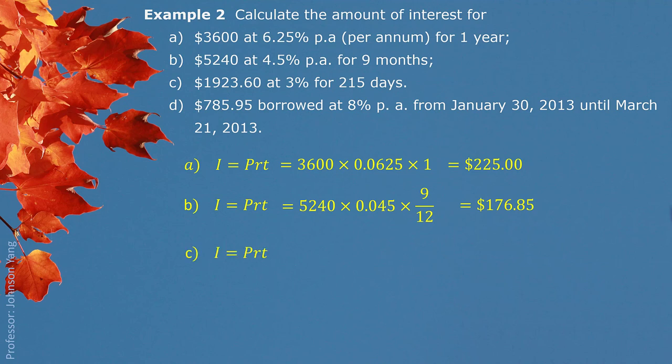Part C: $1,923.60 at 3% for 215 days. We put the information in, noting that 215 days must be switched to years by dividing by 365. The finished calculation gives us interest of $33.99.